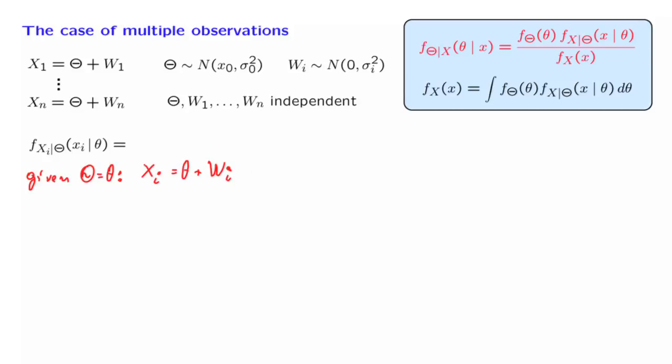And because wi is independent from the random variable theta, knowing the value of the random variable theta does not change the distribution of wi; it will still have this normal distribution. So xi is a normal of this kind plus a constant. And so xi is a normal random variable with mean equal to the constant that we added and variance equal to the original variance of the random variable wi.